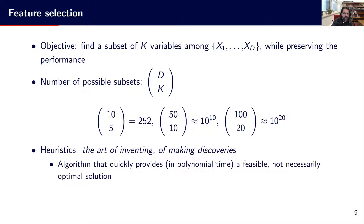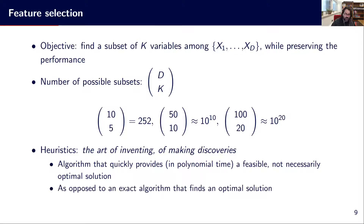We don't have low-complexity deterministic algorithms that give us the best optimal solution in all cases. So we make use of heuristic algorithms that provide in polynomial time a feasible, but not necessarily optimal, solution to the problem. This goes in opposition with exact algorithms, which provide guarantees that we will obtain the optimal solution for a given mathematical optimization problem.